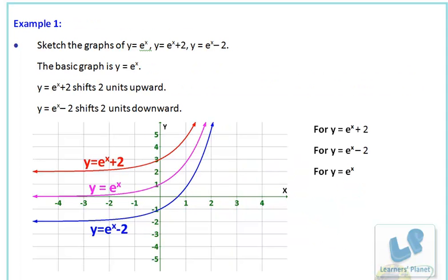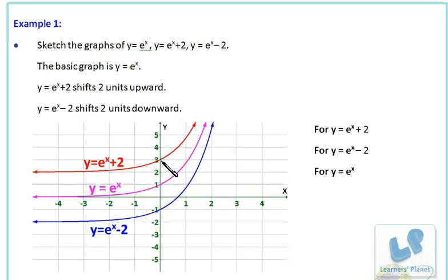Let's take the example of y = e^x, which we discussed in the previous session. For e^(x+2), two units are added to y, so the graph shifts two units upward. When x is 0, y = e^0 + 2 = 3, so the graph passes through (0, 3). Similarly, for e^(x−2), when x is 0, y = 1 − 2 = −1, so the graph passes through (0, −1). If 2 is added, the graph shifts two units upward; if 2 is deducted, the graph shifts two units downward.